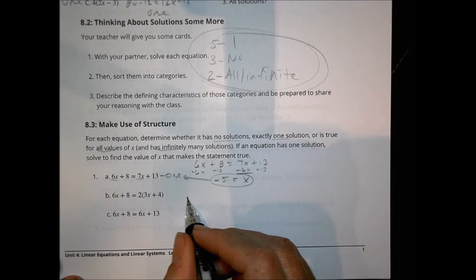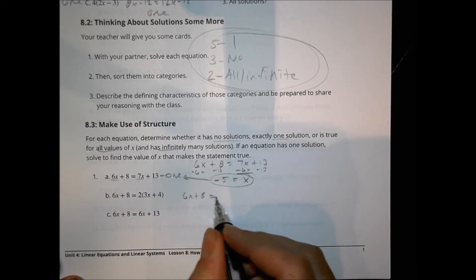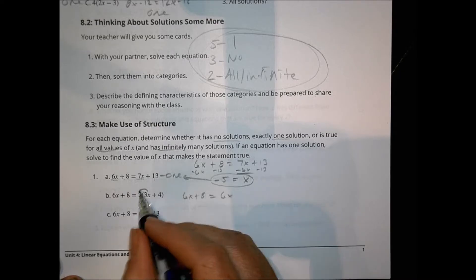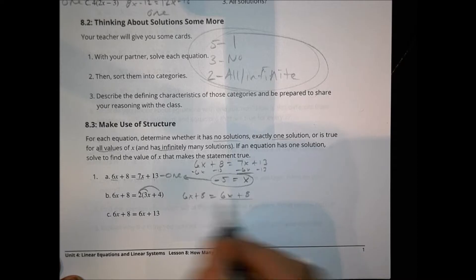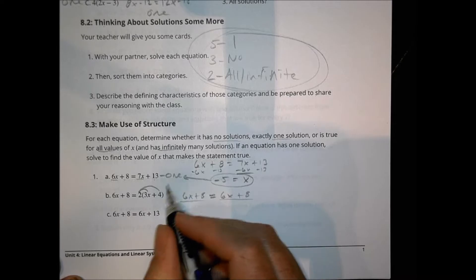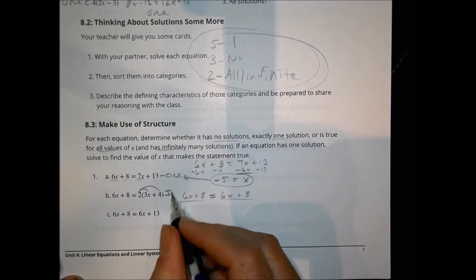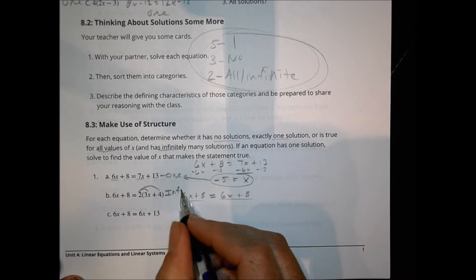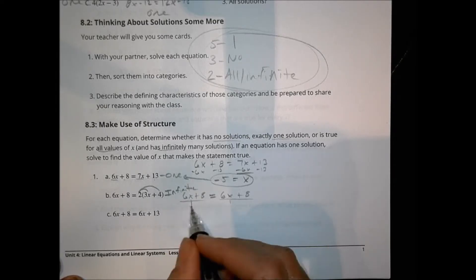For this next equation, we have 6x plus 8 equals 2 times (3x plus 4). Distributing: 2 times 3 is 6x and 2 times 4 is 8. Notice we have two expressions that are identical — these are equivalent. So this is going to have an infinite number of solutions, because I can put any value in for x and get the same answer on both sides.